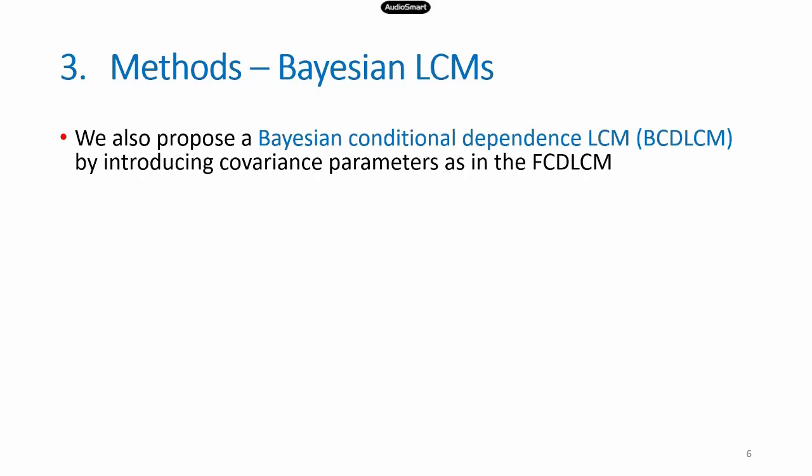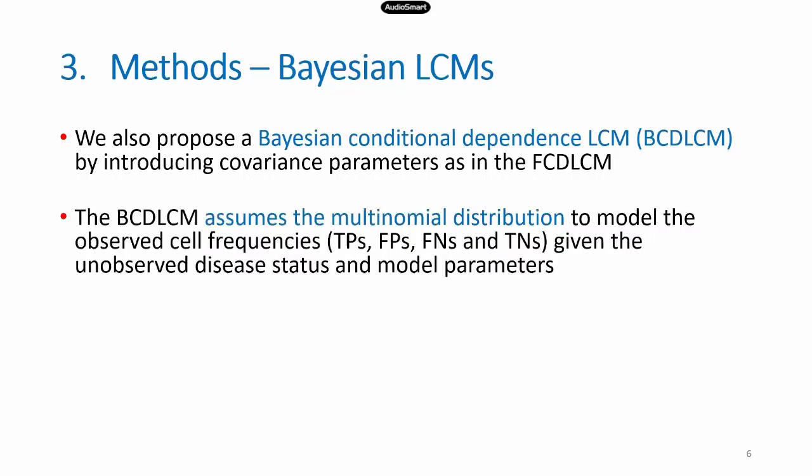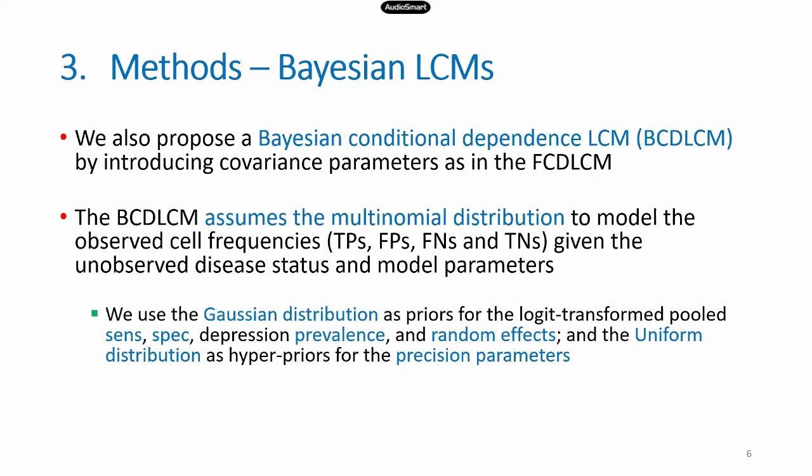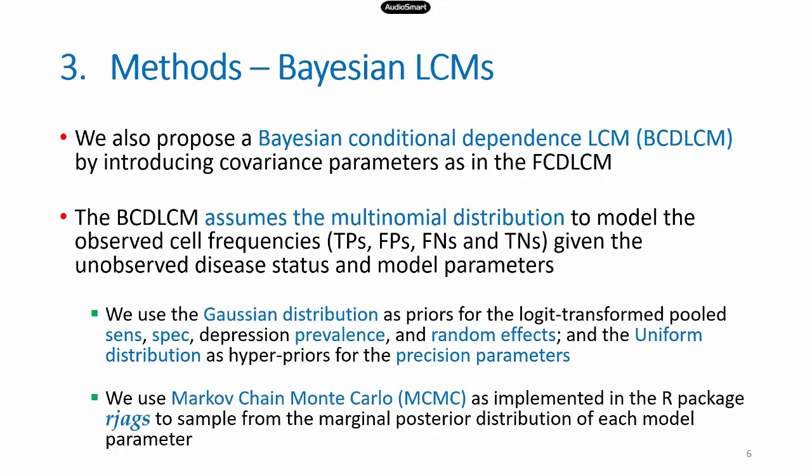In the Bayesian approach — I won't describe the mathematical derivation due to time limits — the posterior distribution again uses the multinomial distribution to describe cell frequencies conditional on unobserved disease status and model parameters. We use a Gaussian distribution as a prior for the logit-transformed pooled sensitivity, specificity, depression prevalence, and random effects. A uniform distribution was used for precision parameters as hyperpriors. We used Markov chain Monte Carlo as implemented in RJAGS to sample from the marginal posterior distribution, since analytical sampling was not feasible.